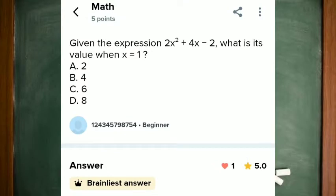Given the expression 2x squared plus 4x minus 2, what is the value when x is equal to 1?